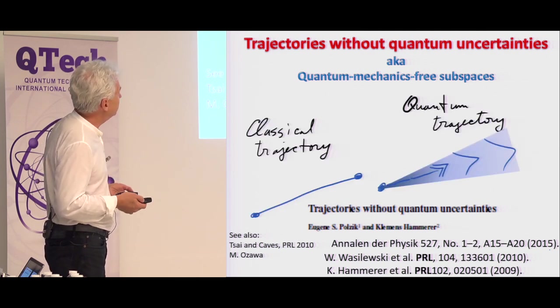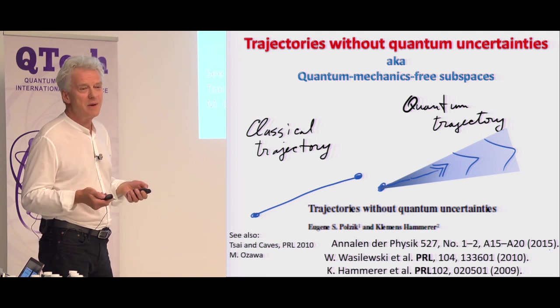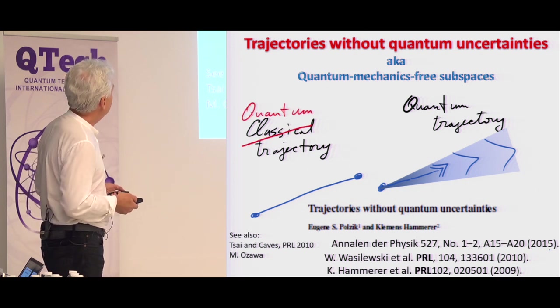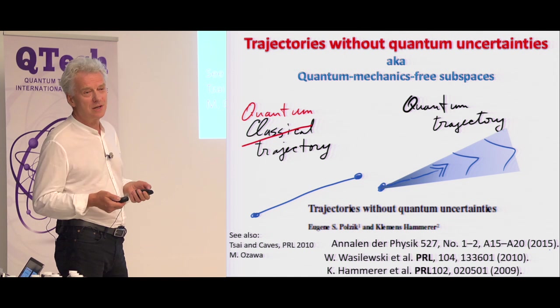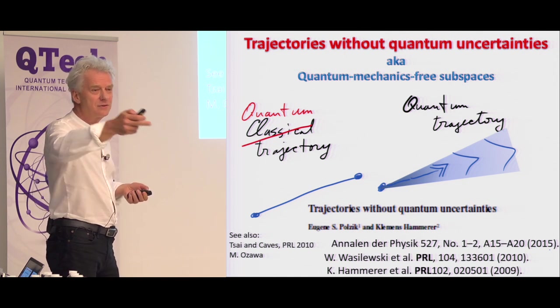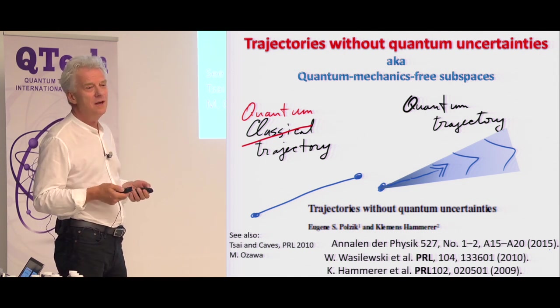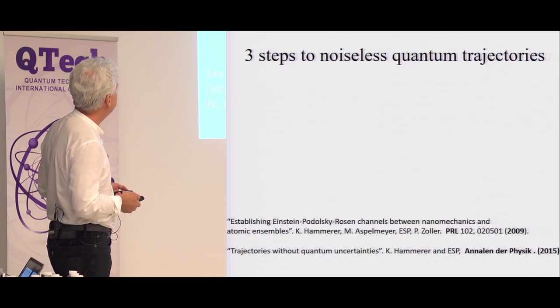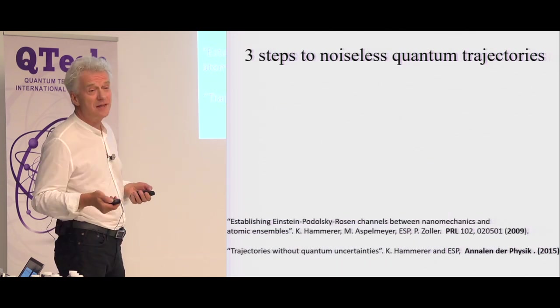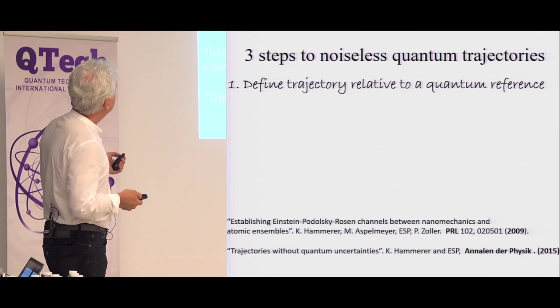So we call this business trajectories without quantum uncertainties. Karl Caves also coined the term quantum mechanics free subspaces. You can read more about it in those papers. Classical trajectory, a quantum trajectory, wave packets, and so on.